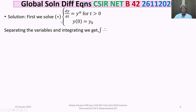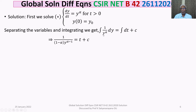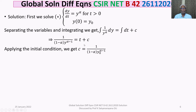Separating the variables and integrating: (1/y^α)(dy/dt) = 1, so ∫y^(−α) dy = ∫dt + c. Integrating, we get (1/(1−α)) · y^(1−α) = t + c. To evaluate c, we use the initial condition: when t = 0, y = y₀. Substituting, we get c = (1/(1−α)) · y₀^(α−1).